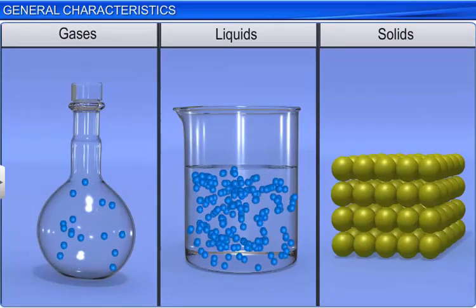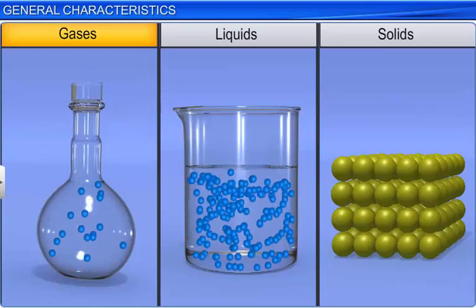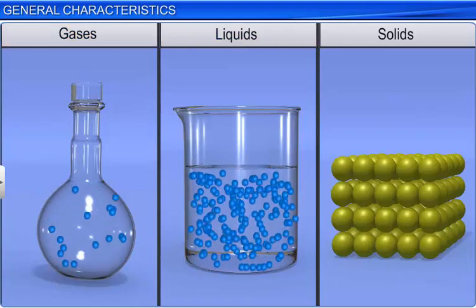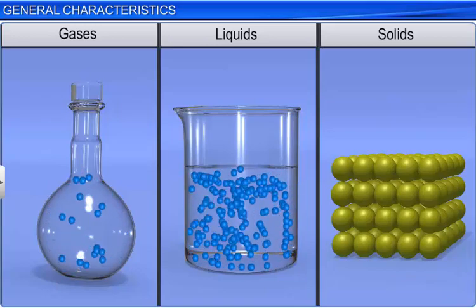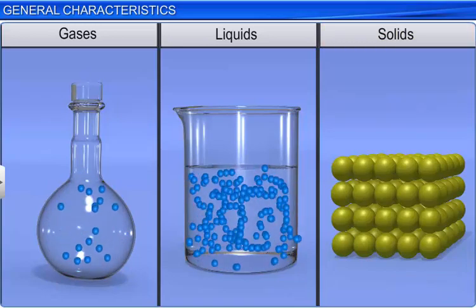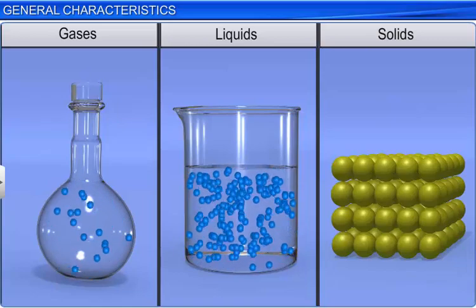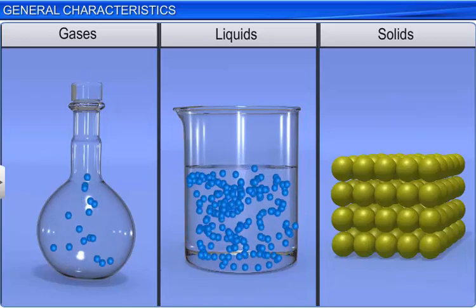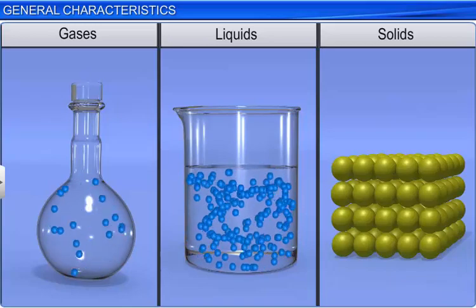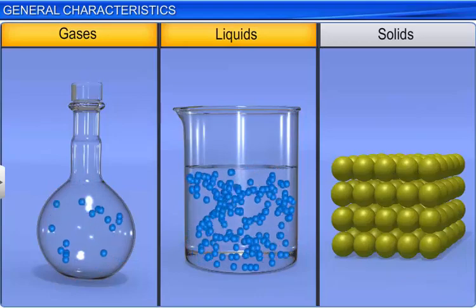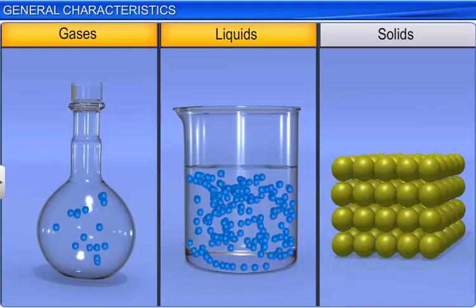You know that the constituent particles in gases and liquids are held together by relatively weak forces of attraction as compared to those in solids. As a consequence, they can translate randomly, rotate, and vibrate. Gases and liquids thus have the ability to flow and take the shape of their container.